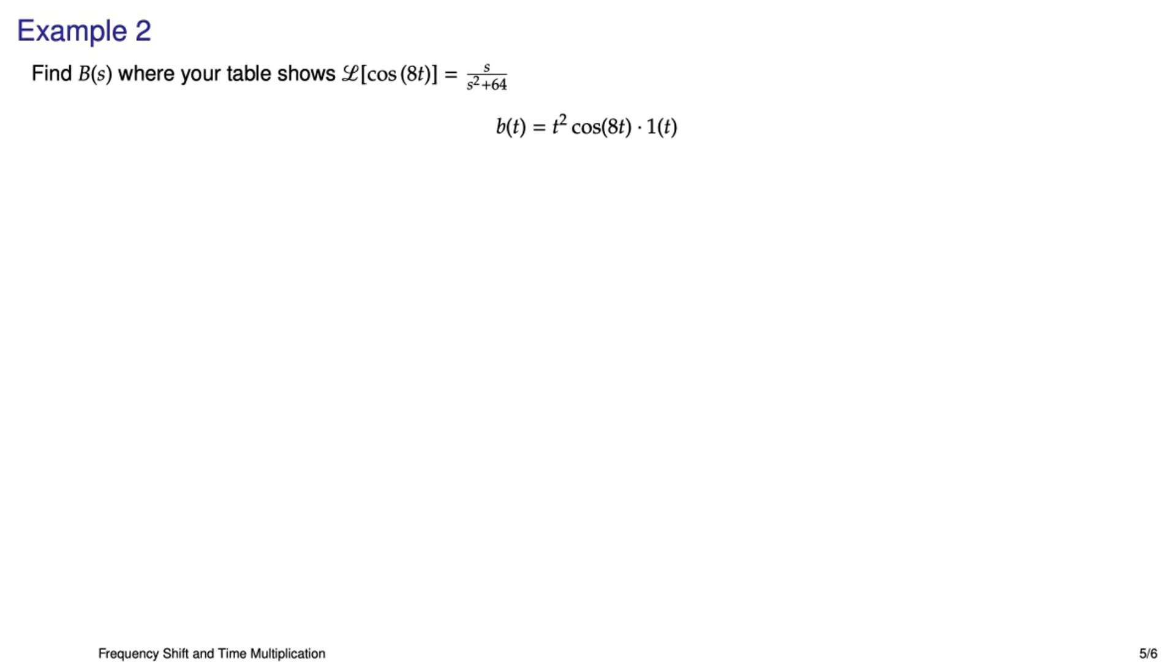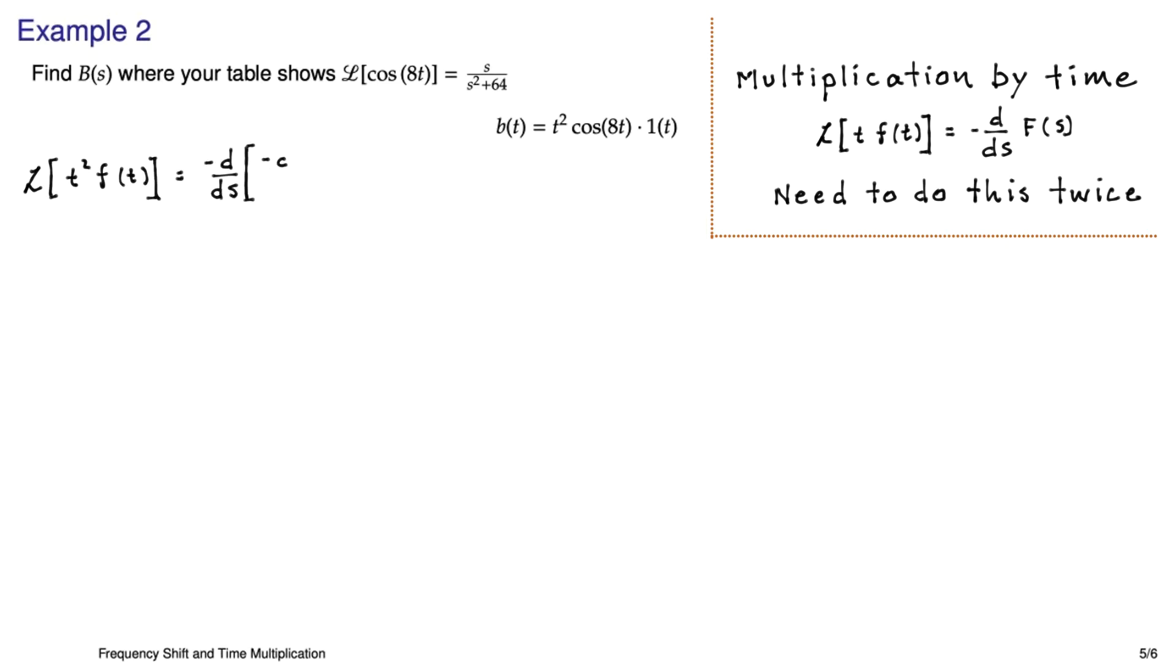This example is screaming multiplication by time. We have a t-squared times something that we know the Laplace transform of, that is cosine 8t. Now here's the property from the previous page just showing it so that we can remember what it looks like. And we're going to need to do this twice because we have a t-squared. So here's what it looks like when we do this property for a t-squared. We just take two d/ds's, but we have to flip the sign twice, and so we just end up with no sign flip. Not too bad.